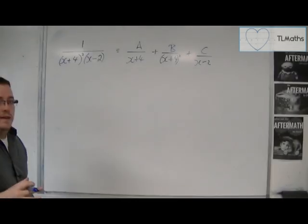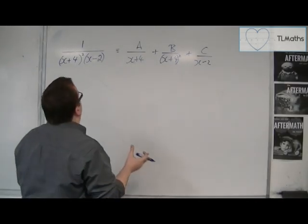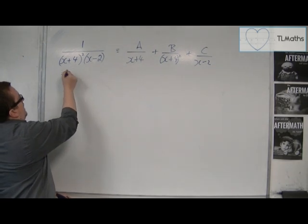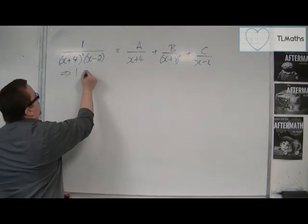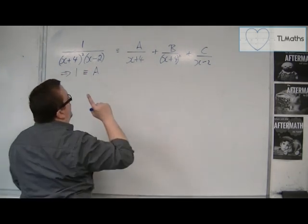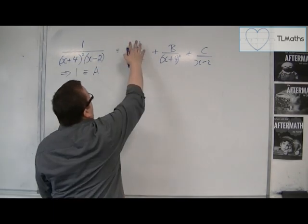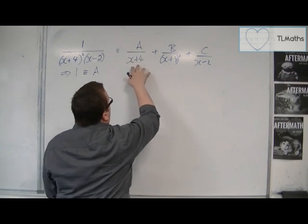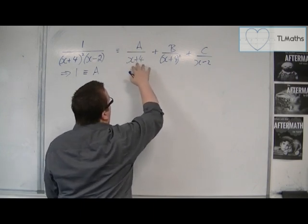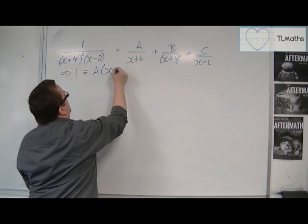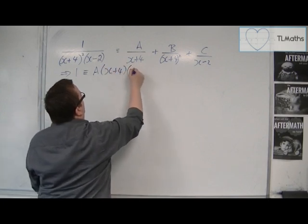So from there, it's business as usual, really. We can go straight in and go to 1 is equivalent to a. Now, when we're multiplying both sides by this x plus 4 squared x minus 2, this fraction has an x plus 4, but it doesn't have two of them. So it needs another, and it needs the x minus 2.